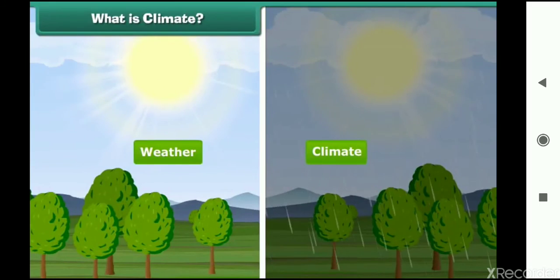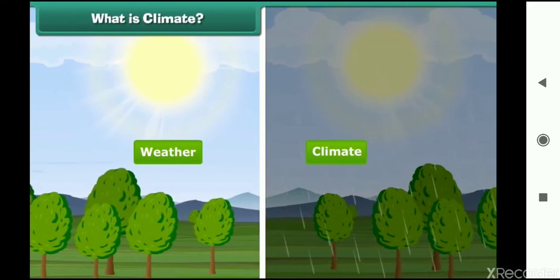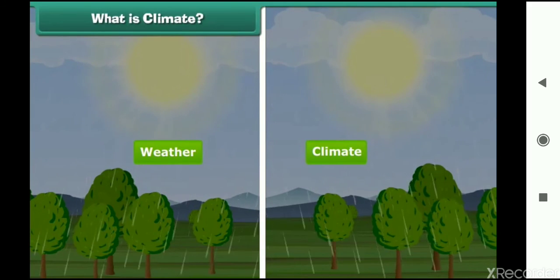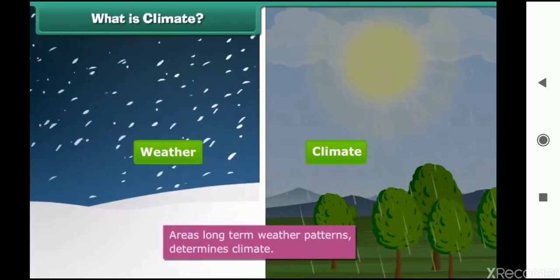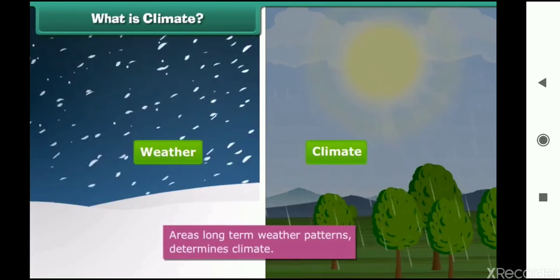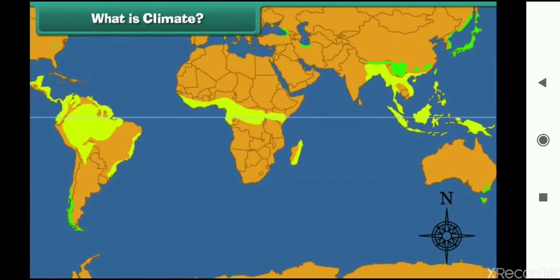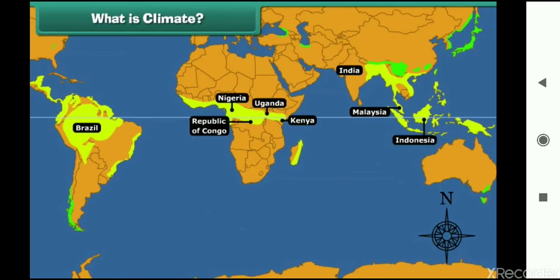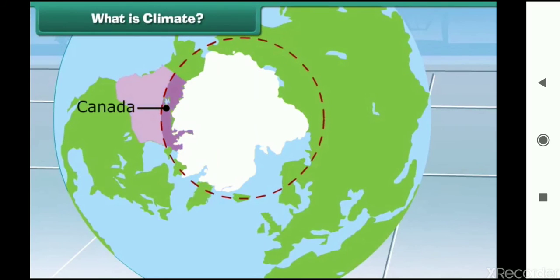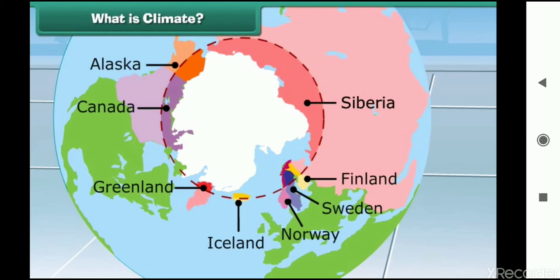Is weather and climate the same? No. Areas' long-term weather patterns determine climate. For example, areas near the equator have warm climate, and the areas near the poles have much colder climate. So children, now you can easily differentiate weather from climate.